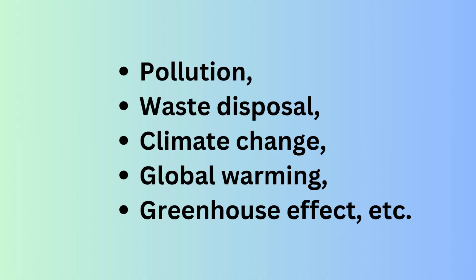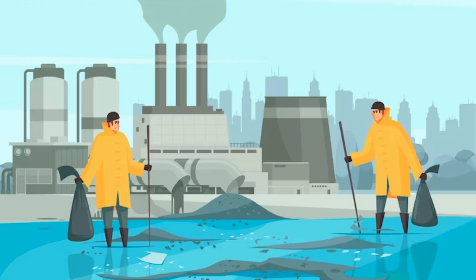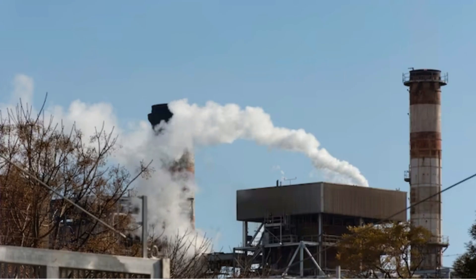Talking about pollution, pollution is any undesirable change in the physical, chemical, or biological characteristics of air, land, water, or soil. Agents that bring about such an undesirable change are known as pollutants. In order to control environmental pollution, the Government of India has passed the Environmental Protection Act in 1986 to protect and improve the quality of the environment, i.e. air, water, and soil.